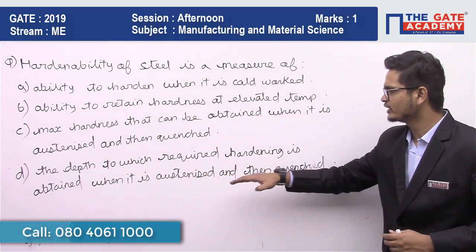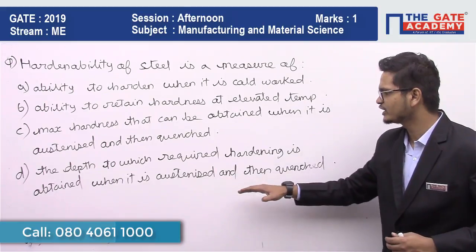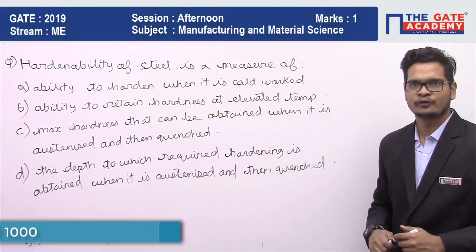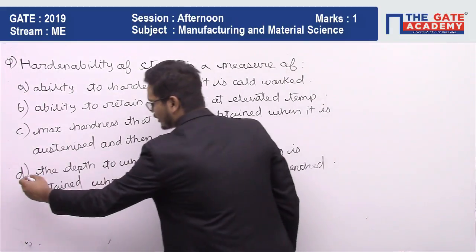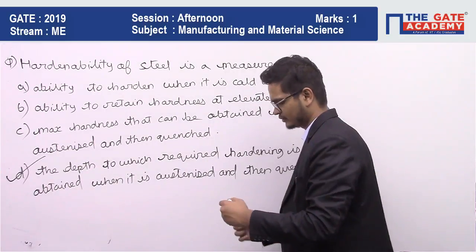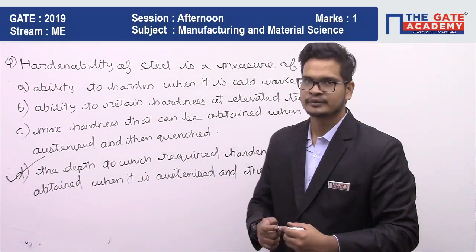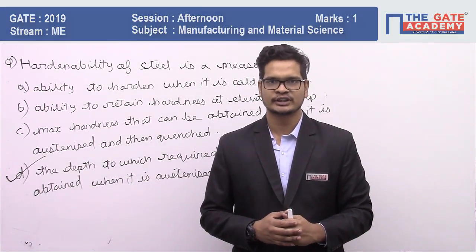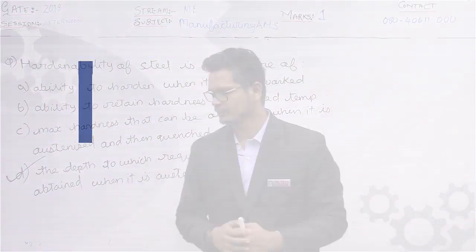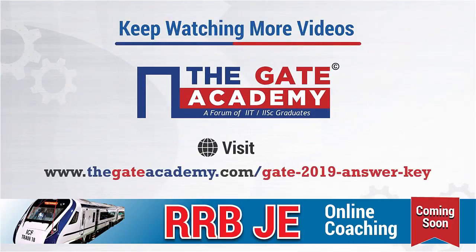Therefore, the depth to which required hardening is obtained when it is austenized and then quenched is the right answer. Hope you liked the video — please share this with your friends. Thank you!